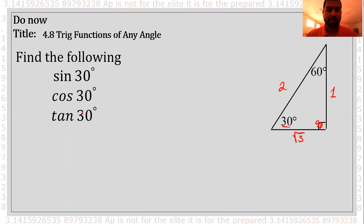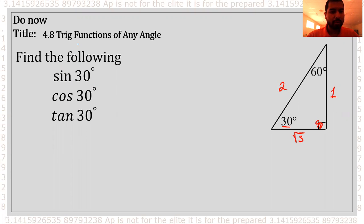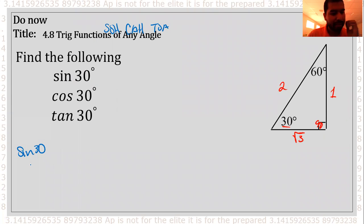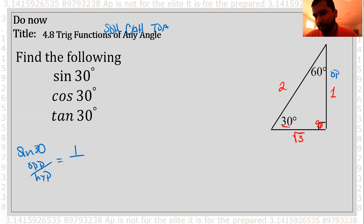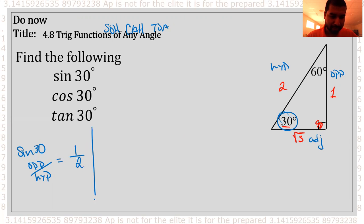Ideally this is to help us out when we want to go ahead and find our reference angles or evaluate our trig functions. So we have the following, and keep in mind if you've struggled with this, you can always rely on SOH-CAH-TOA. So let's go ahead and do that. We got sine of 30 degrees. So we're going to look at the opposite side divided by the hypotenuse. So we have the opposite side, which is 1, divided by my hypotenuse. So we have 1 divided by 2. For cosine of 30 degrees, we have the proportion adjacent divided by my hypotenuse.